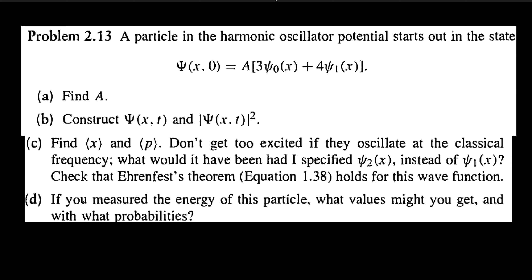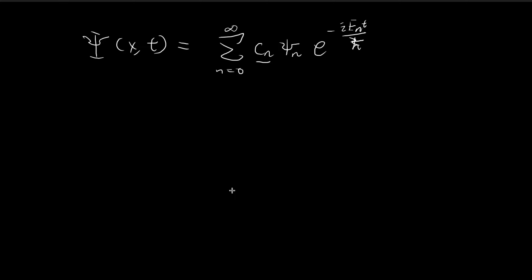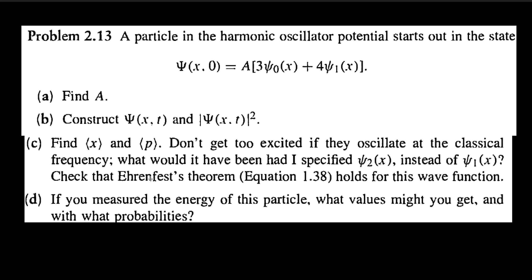Now we finish part d, which is pretty straightforward. Recall that a wave function is a linear combination of all stationary states, with constants cₙ set to satisfy the initial conditions. David Griffiths proved in the section on the infinite square well that the probability of measuring the nth energy level is equal to |cₙ|². We use this result to solve part d, which asks for the probability of finding each energy level.